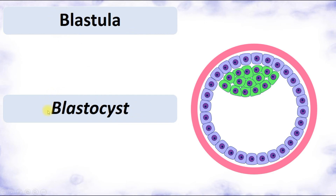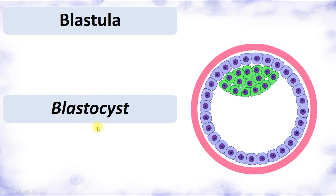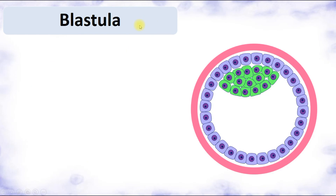There are two terms: blastula and blastocyst. We can call this structure by both names. Blastocyst is the special name for the human blastula. Different animals have different kinds of blastula — for example, amphibia have amphiblastula — but the human blastula and that of other mammals is specifically called a blastocyst. Blastocyst is the kind of blastula characteristic for human embryos.